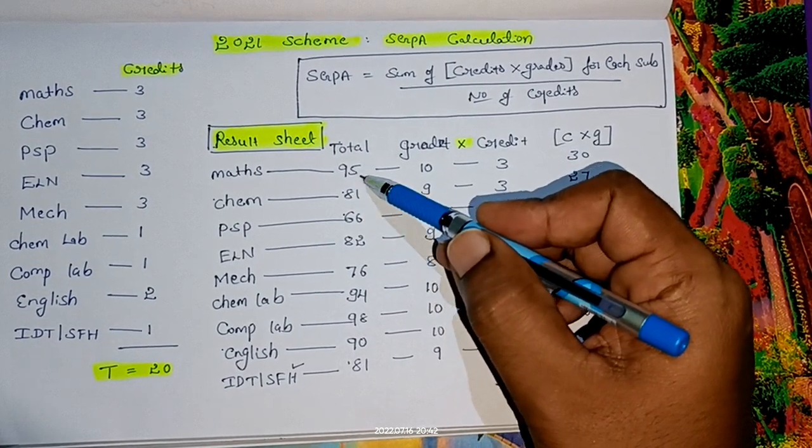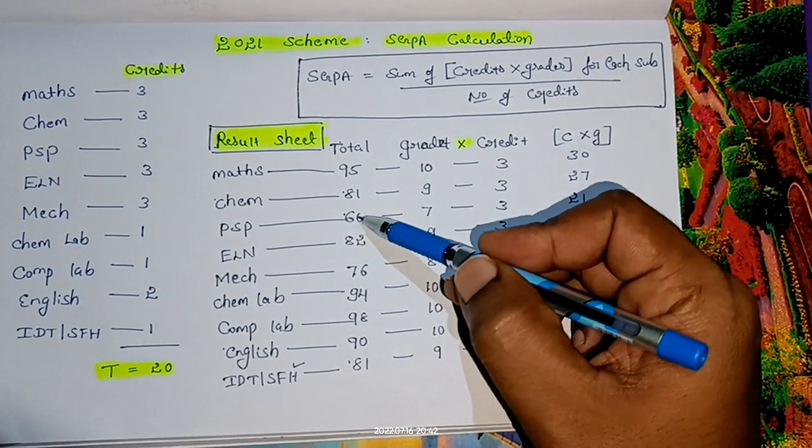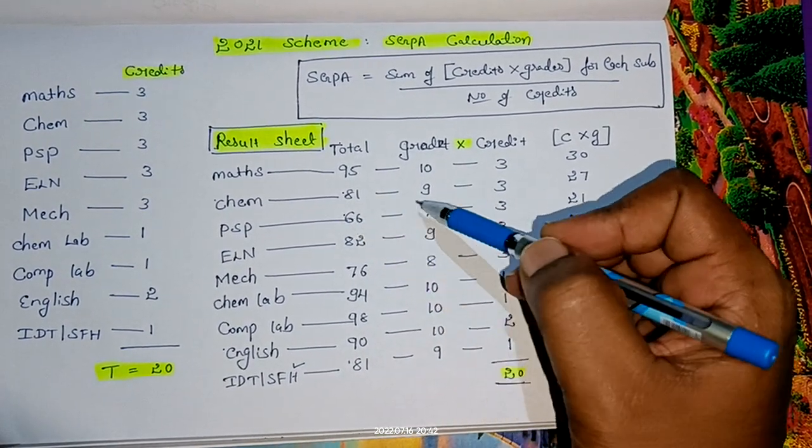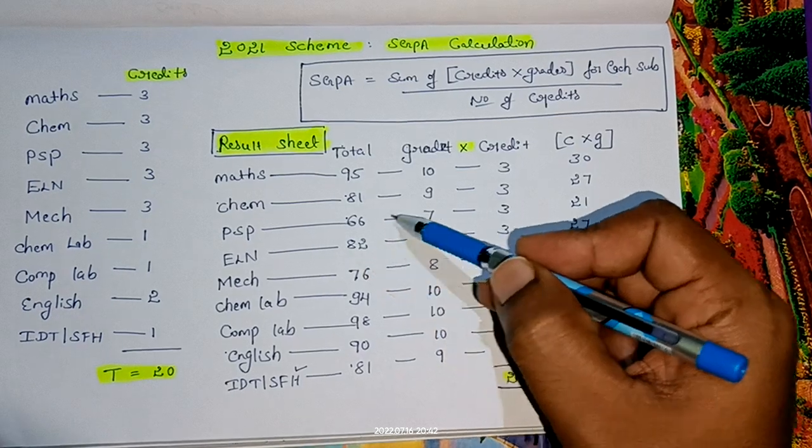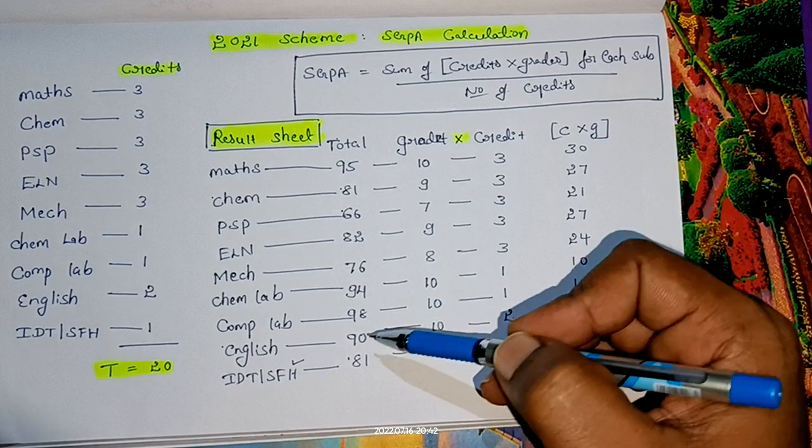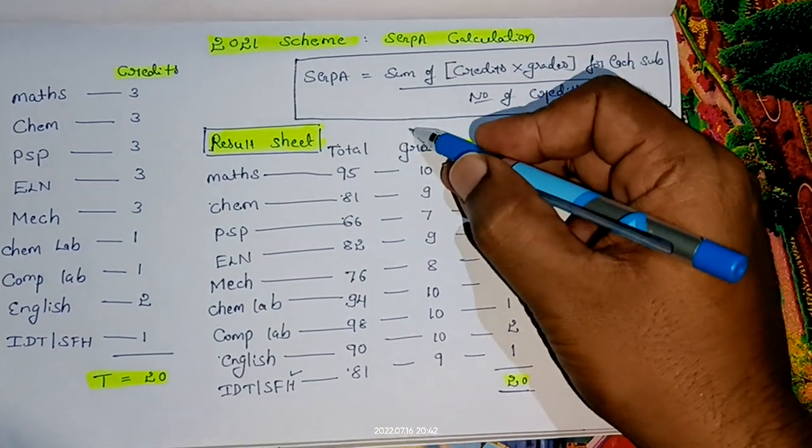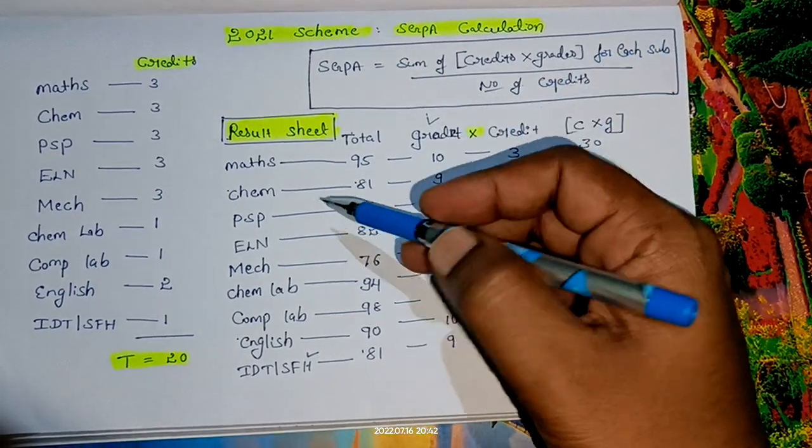Similarly, for Chemistry 81, for 8 you should add 1 and you get 9. For 66, the first digit is 6, so 6 plus 1 is 7. Continuing this way: 8+1=9, 7+1=8, 9+1=10, 9+1=10, 9+1=10, 8+1=9. So grades are written for all the subjects.